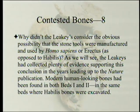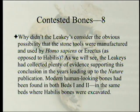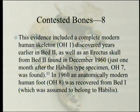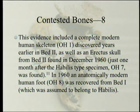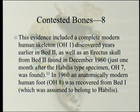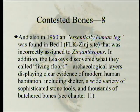Why didn't the Leakeys consider the obvious possibility that the stone tools were manufactured and used by Homo sapiens or Erectus as opposed to habilis? The Leakeys had collected plenty of evidence supporting this conclusion in the years leading up to the Nature publication. Modern human-looking bones had been found in both beds one and two — the same beds where habilis bones were excavated. This evidence included a complete modern human skeleton, OH1, discovered years earlier in bed two, as well as an Erectus skull from bed two found in December 1960, just one month after the habilis type specimen OH7 was found. In 1960, an anatomically modern human foot, OH8, was recovered from bed one — assumed to belong to habilis. Also in 1960, an essentially human leg was found in bed one and was incorrectly assigned to Zinjanthropus. The bones are found scattered, not together, so you can assign whatever you want to whatever you want.